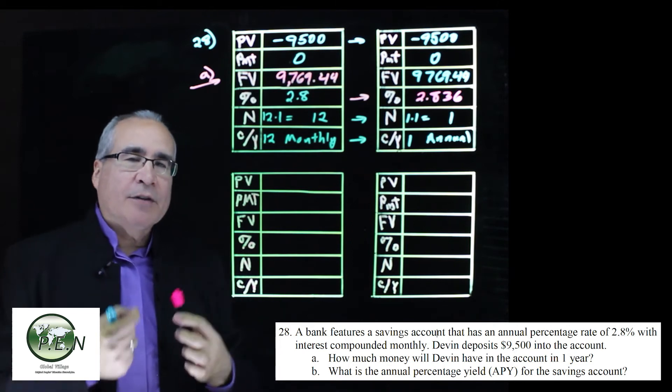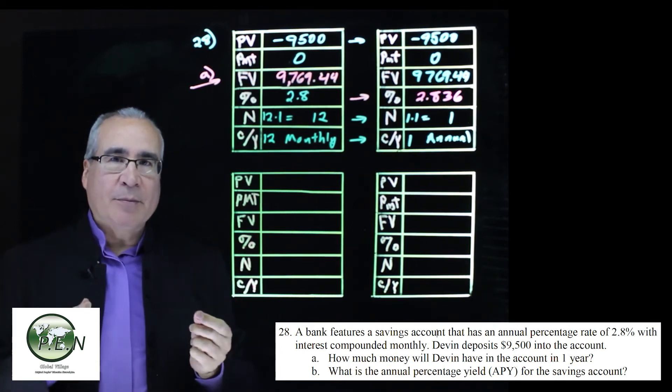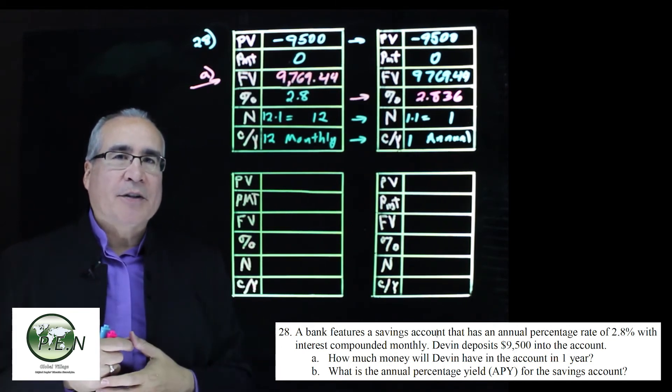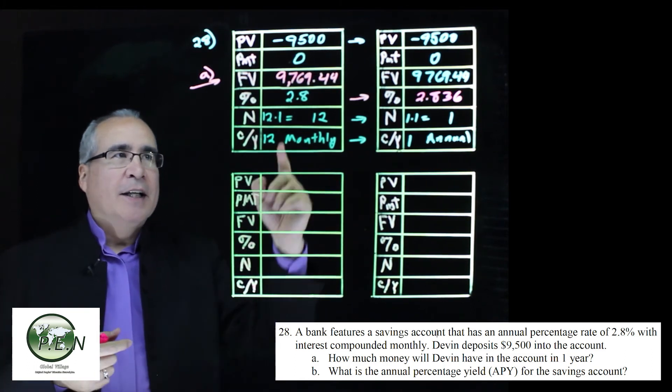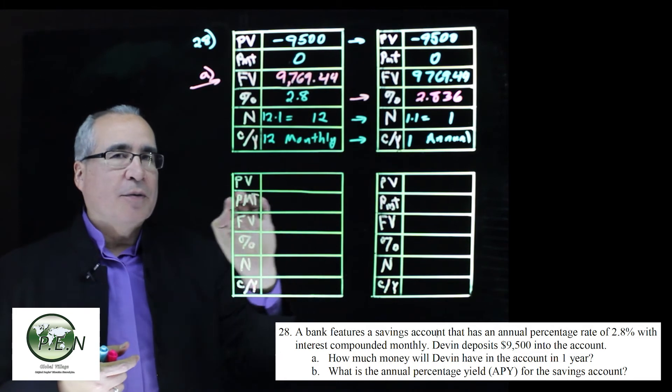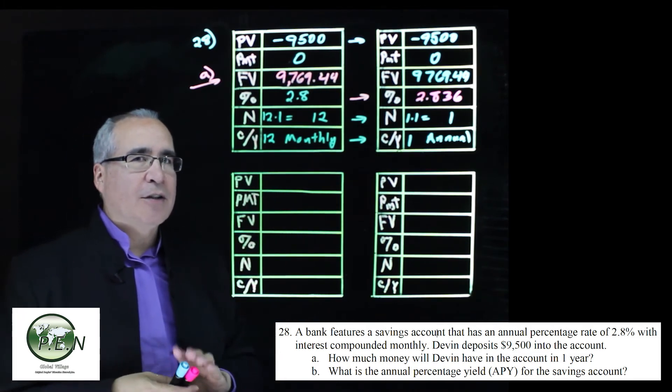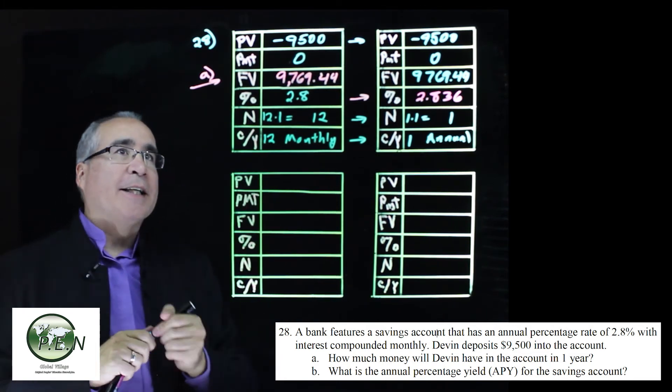So it allows us to compare, by using APY, it allows us to compare two different investments that might have different features. It sort of standardizes and says, what if they all have the same feature, so we can just look at the interest rate and know which one is actually doing better. Let's try it again.